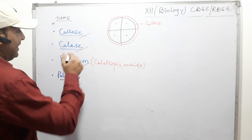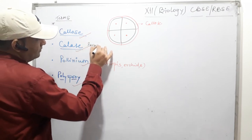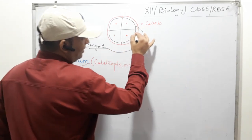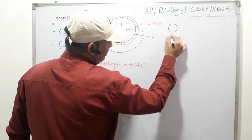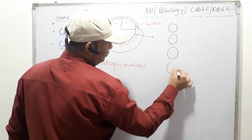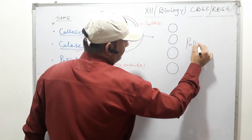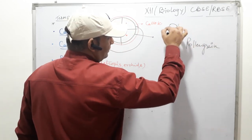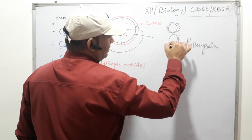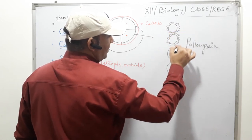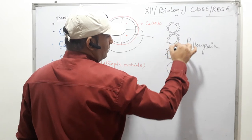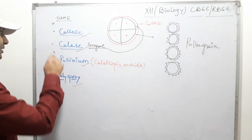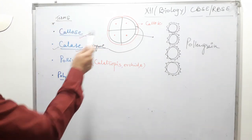Second term is callase. Callase is a type of enzyme which is released by the tapetum. This enzyme dissolves the callus membrane and dissociates the four microspores into four individual pollen grains. Each microspore then develops into a pollen grain. So callase is the enzyme which dissolves the callus membrane.